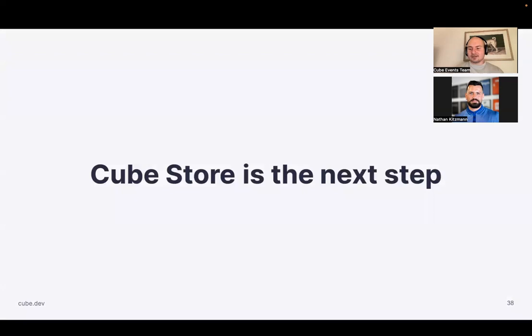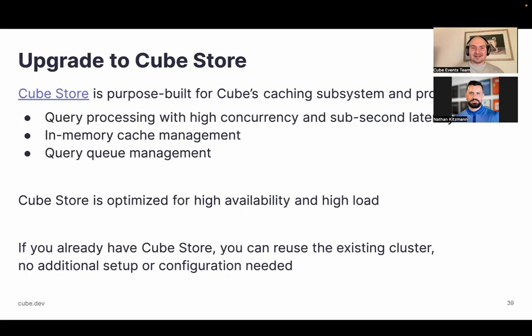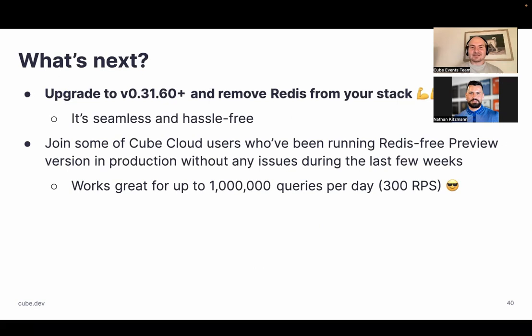With that background and understanding, I want to emphasize that Qube Store is indeed the next step. You should feel free to upgrade to Qube Store because it was purpose-built and will now take care of in-memory cache, query queue, and pre-aggregations, giving you sub-second latency. It's really optimized for high availability and high load. If you're already using Qube Store, you can just reuse it — you'll be removing things from your deployment and simplifying by removing Redis, with no additional setup or configuration needed.